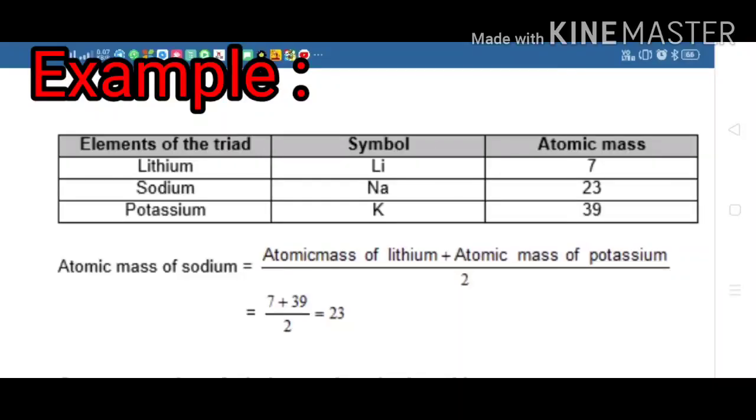So in this example there are three elements given: lithium, sodium, and potassium. Their atomic masses are also given. The atomic mass of lithium is 7, the atomic mass of sodium is 23, and the atomic mass of potassium is 39.